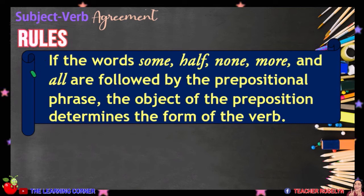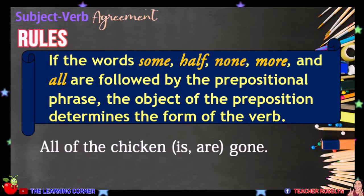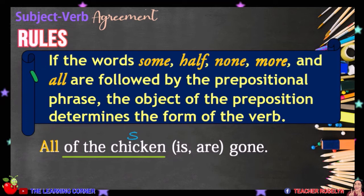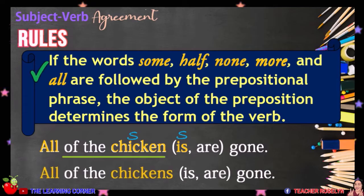If the words SOME, HAVE, NONE, MORE, and ALL are followed by a prepositional phrase, the object of the preposition determines the form of the verb. For example, in this sentence, the word ALL is followed by the prepositional phrase OF THE CHICKEN. The object CHICKEN is a singular noun, so we will use the verb IS. All of the chicken is gone. If the object of the preposition is plural, we will use the plural verb. All of the chickens are gone.